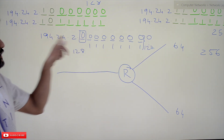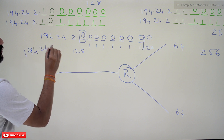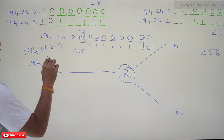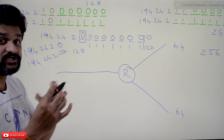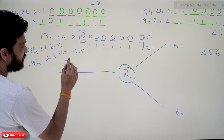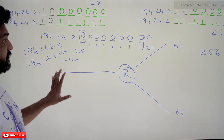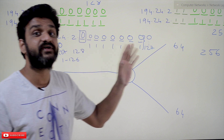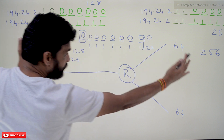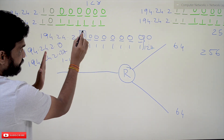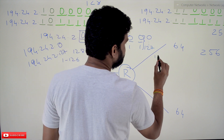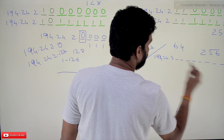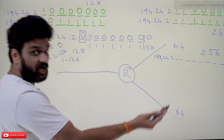The possibility for the first subnet is from 0 to 127. The network ID for this subnetwork is 194.24.2.0, the directed broadcast address is 194.24.2.127, and the host IDs are from 1 to 126. Now we are left with 128 remaining IP addresses, as we have taken the first half with subnet bit zero.